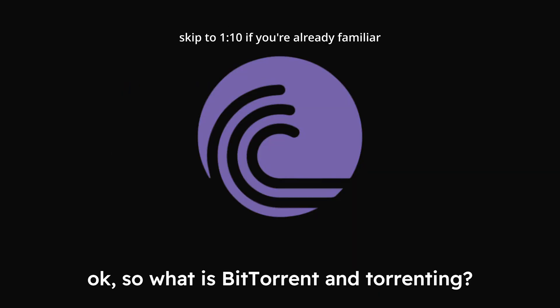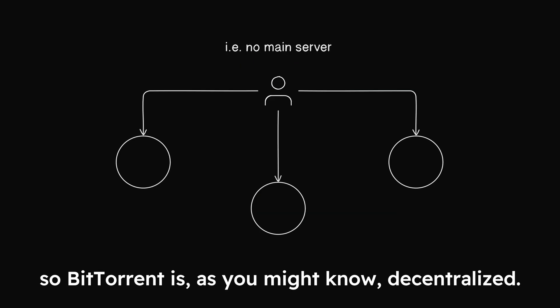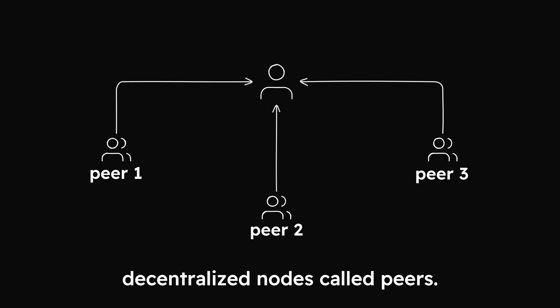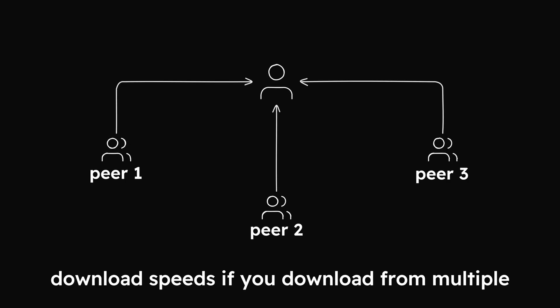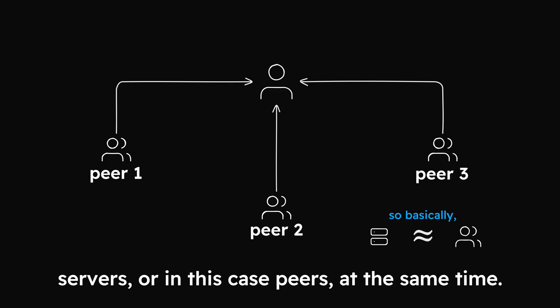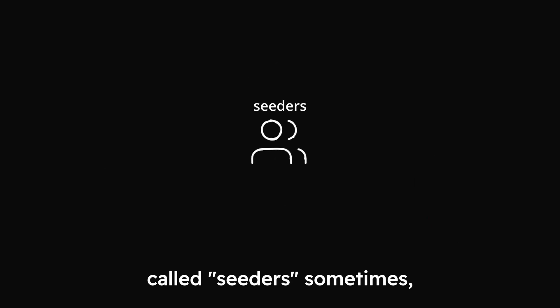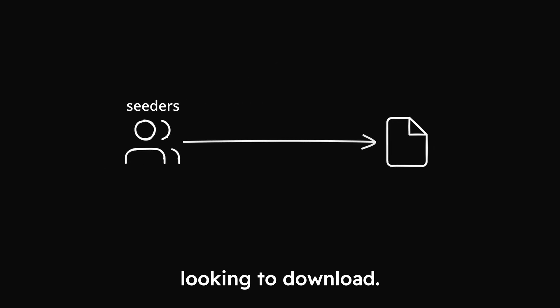So what is BitTorrent and torrenting? BitTorrent is decentralized, and downloads occur between these decentralized nodes called peers. You can commonly get much better download speeds if you download from multiple servers, or in this case peers, at the same time. These peers are also called seeders sometimes, as they seed the file that you're looking to download.